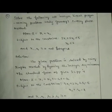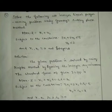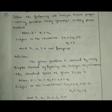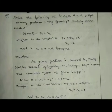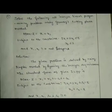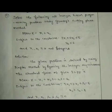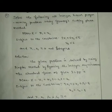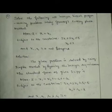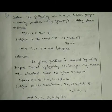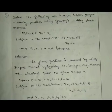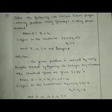Now we are going to solve an all integer linear programming problem using Gomory's Cutting Plane Method. The problem is: maximize z equal to x1 plus x2, subject to the constraints 3x1 plus 2x2 less than or equal to 5 and x2 less than or equal to 2, where x1, x2 are greater than or equal to 0 and are integers. The standard form is: maximize z equal to x1 plus x2, subject to 3x1 plus 2x2 plus s1 equal to 5 and x2 plus s2 equal to 2, where s1 and s2 are slack variables and x1, x2, s1, s2 are non-negative.